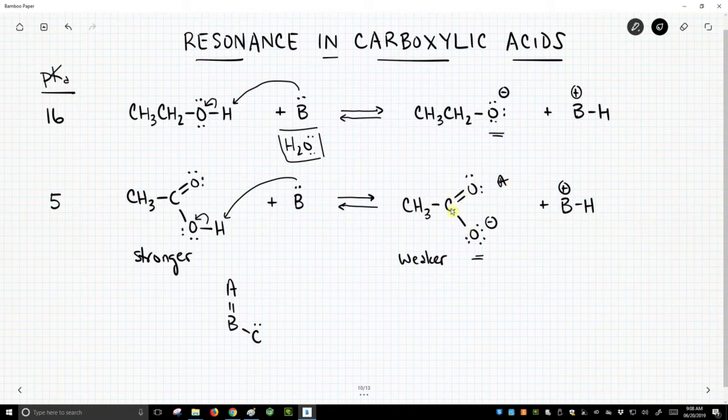We have a carbon-oxygen double bond, and there's a single bond to another atom with a lone pair, AB double bond to another atom, C, with a lone pair. So we can actually draw a resonance form off of this.